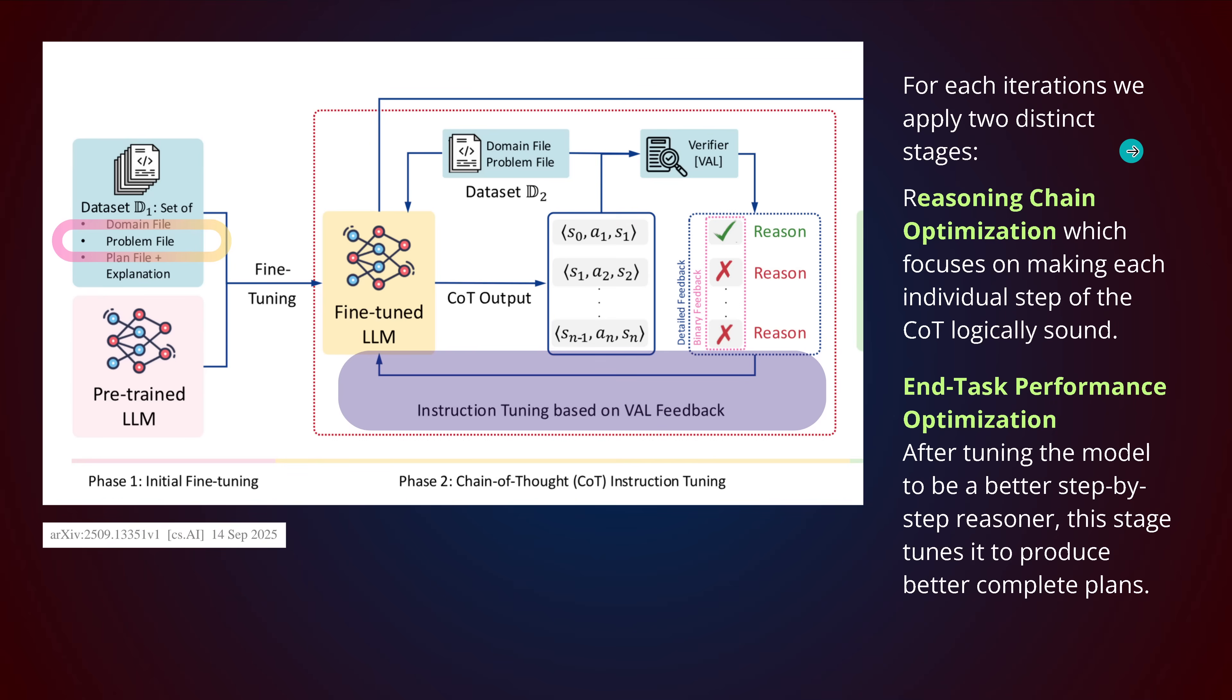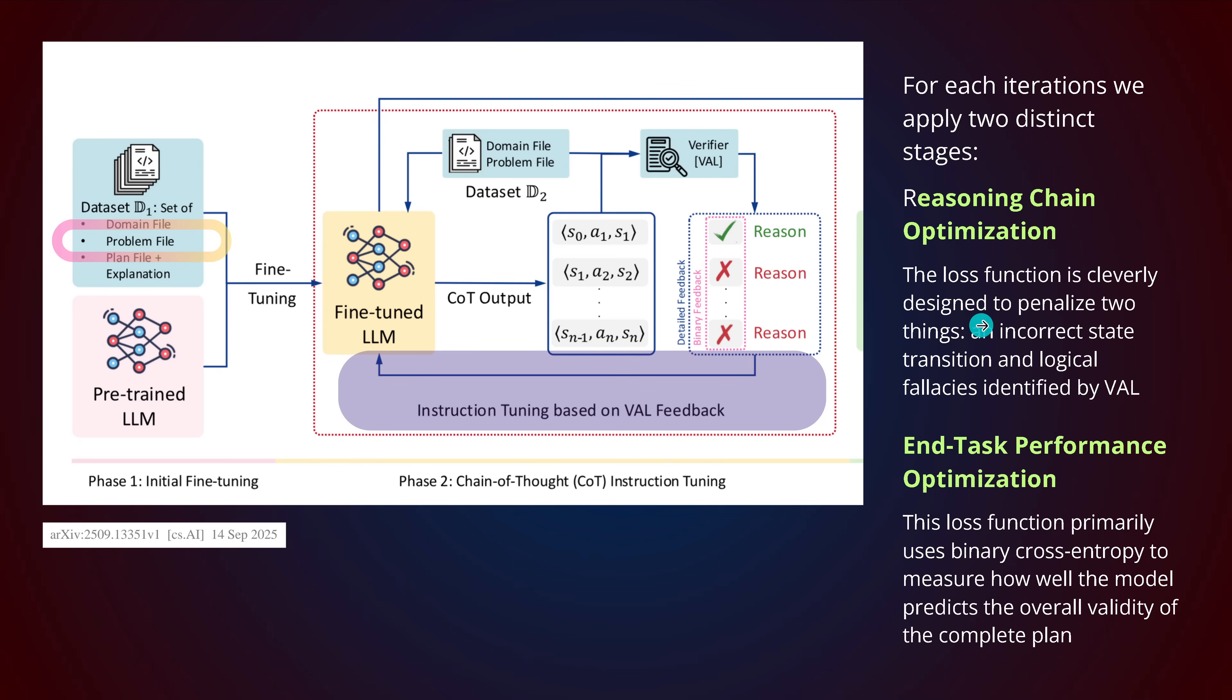For each iteration we apply two distinct optimization methodologies. You want detailed level optimization on the reasoning chain itself - reasoning chain optimization that focuses on making each individual step logically sound. We define a particular loss function for this task. But we also want the total plan to be the best plan available. So we have end-task performance optimization. After tuning the model to be a better step-by-step reasoner, this is tuning to produce better complete complex plans with a different loss function. The first loss function is designed to penalize incorrect state transitions and logical problems identified by Val. The end-task performance loss function is just binary cross entropy that is classical and standard.